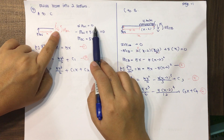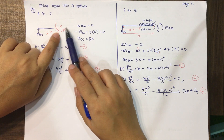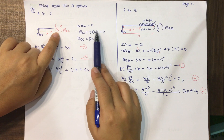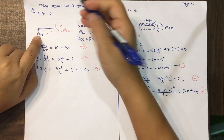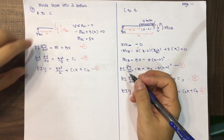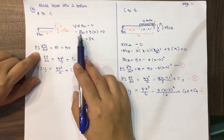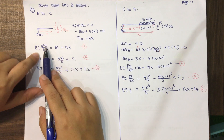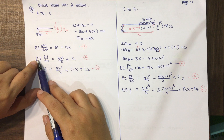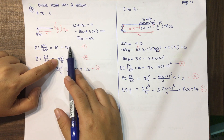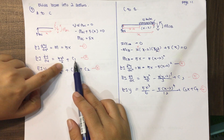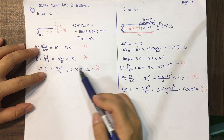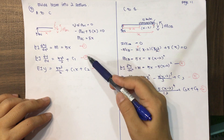For section AC, taking the sum of moments equal to zero: negative M_AC plus 5X equals 0, so M_AC equals 5X. Since M equals EI times d²Y/dX², we integrate: EI times dY/dX equals 5X²/2 plus C1. Integrating again: EI times Y equals 5X³/6 plus C1·X plus C2. These are equations 1, 2, and 3.